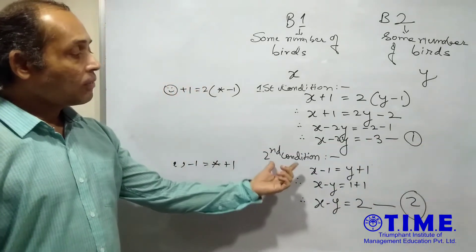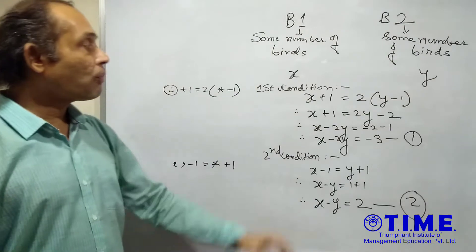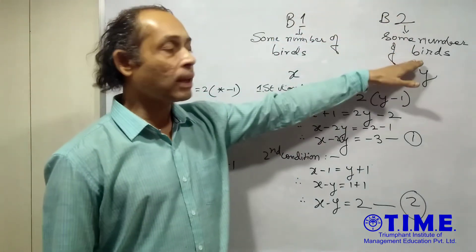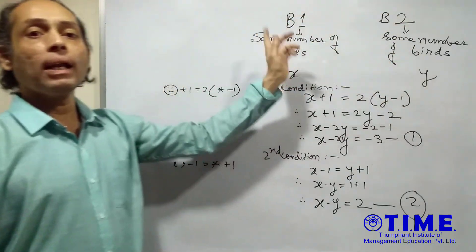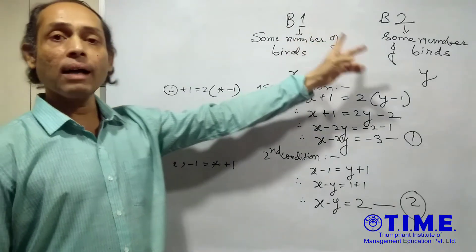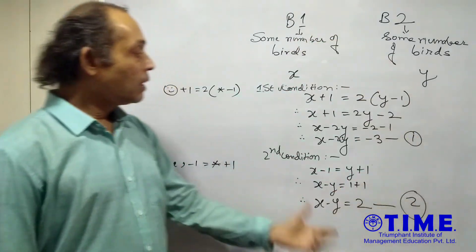Second condition we have is the birds on B2. They say that if one of you flies and comes over here, we will be equal in number. Both of the branches will have equal number of birds.